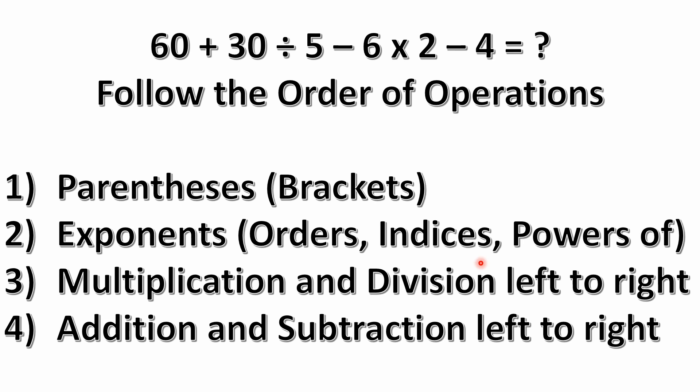Next would be to look for any multiplication and division, solving left to right. And we solve those in the order that we encounter them. If you're going left to right, the first thing you'll find is the 30 divided by 5. And so we would start actually with that.